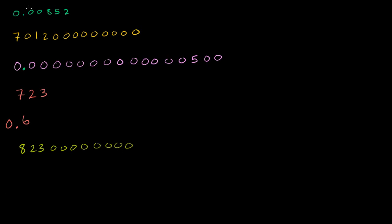For this first one, 0.00852, to write it in scientific notation we want to figure out the largest exponent of 10 that fits into it. We go to the first non-zero term, and count how many positions to the right of the decimal point we have, including that term. That gives us 1, 2, 3 — so it's equal to 8.52 times 10 to the minus 3.